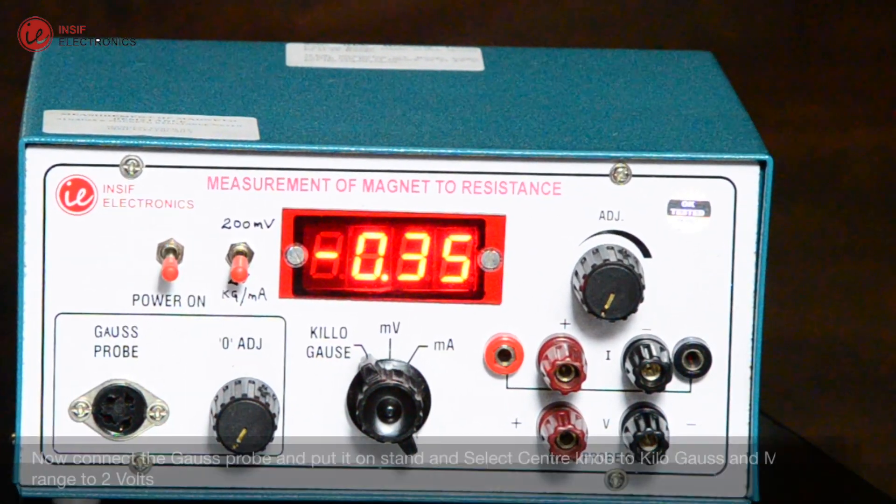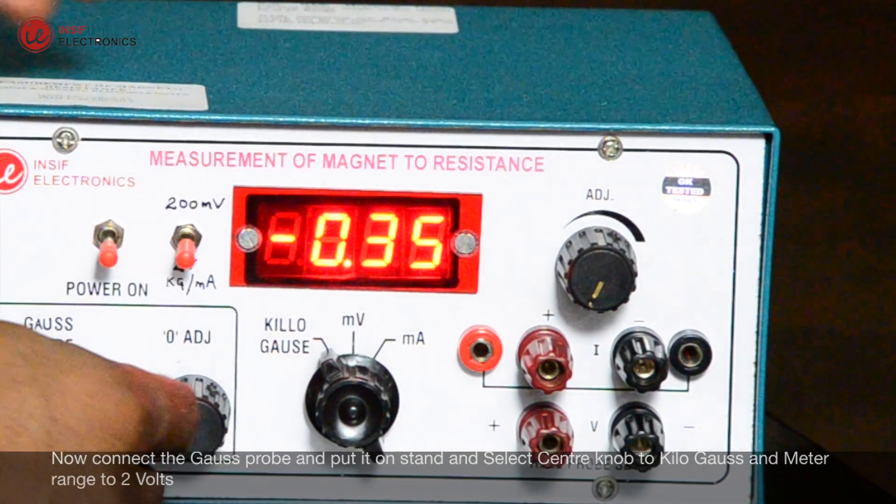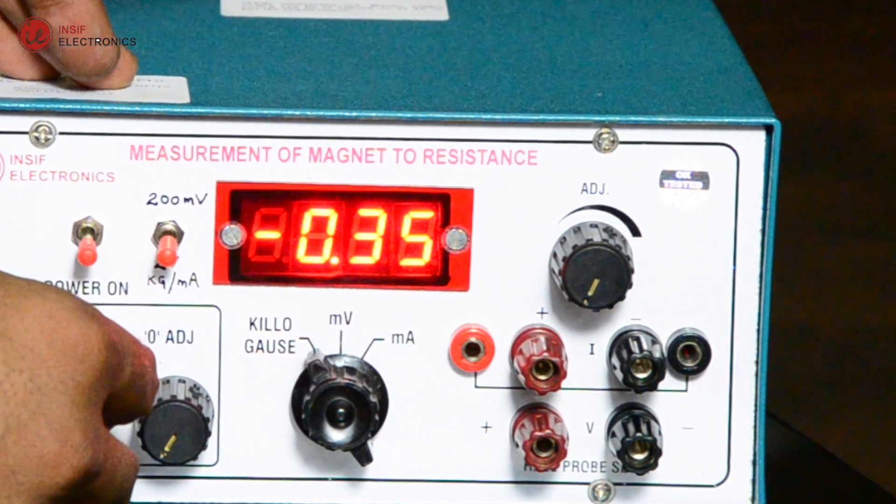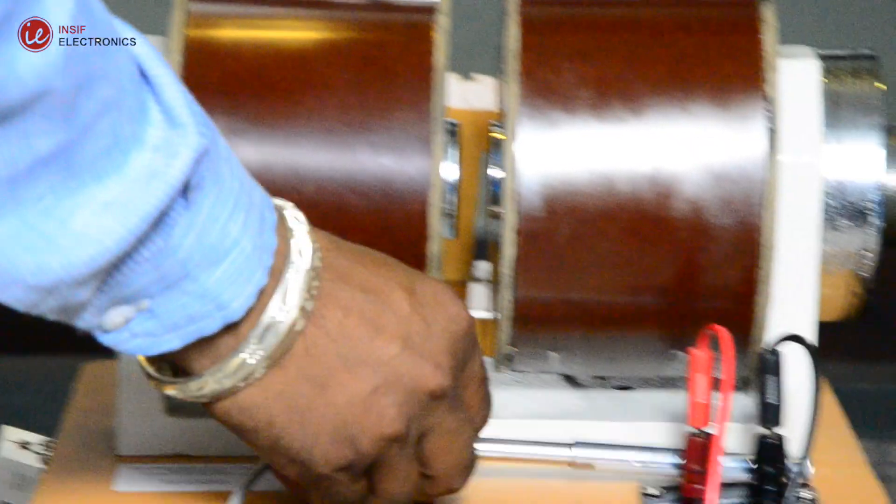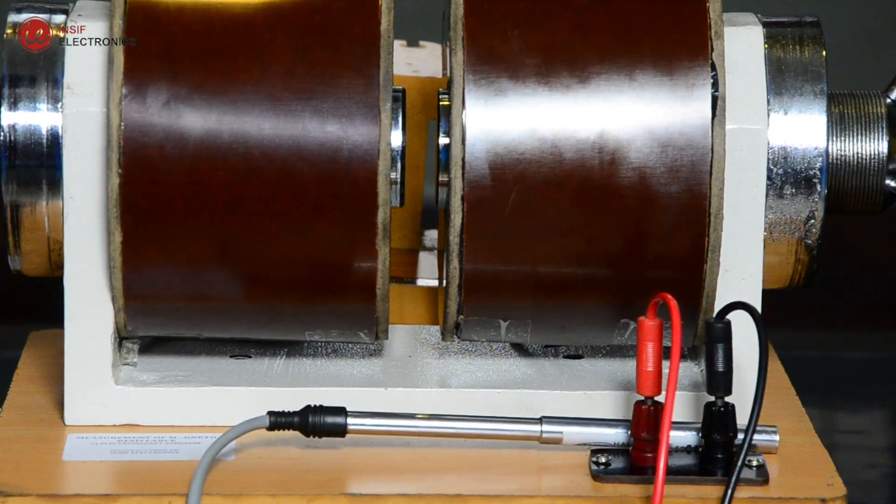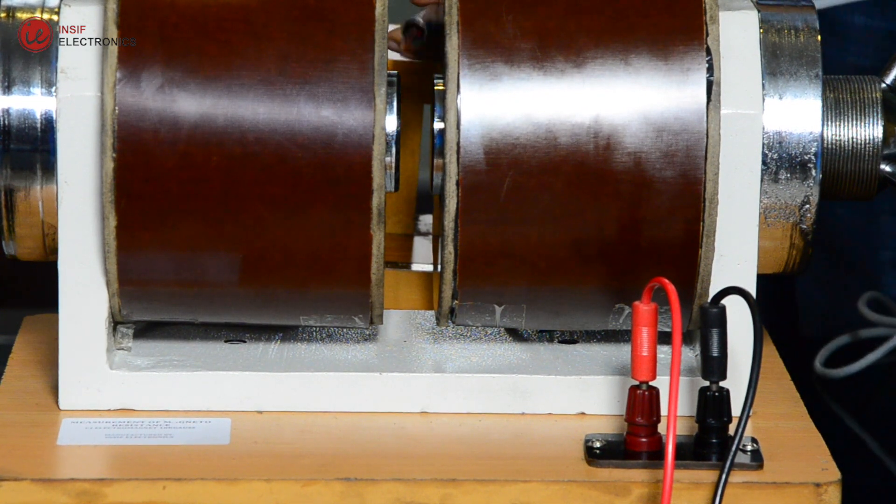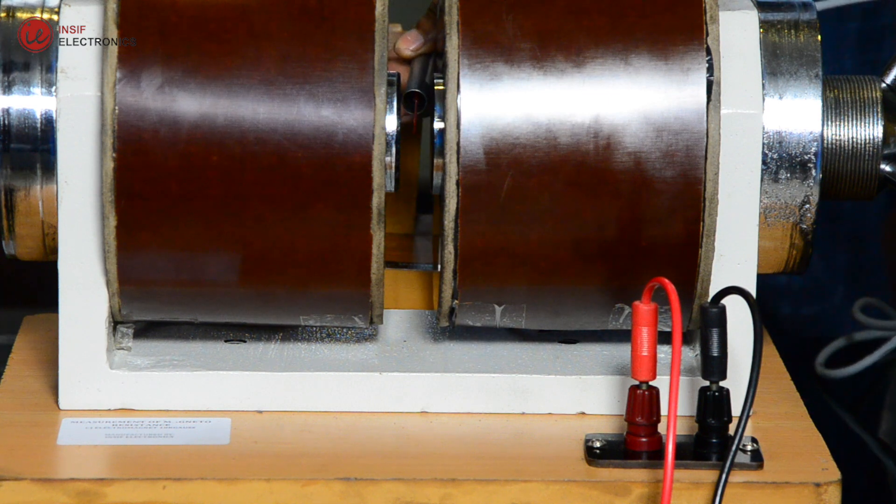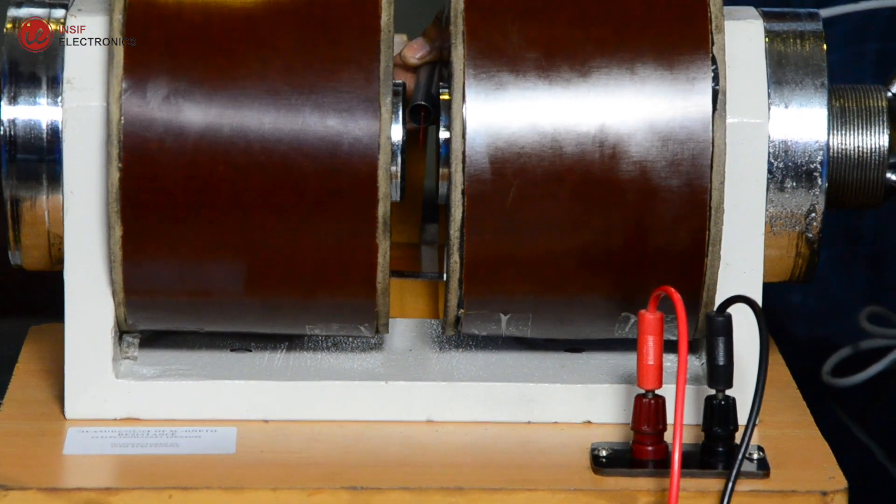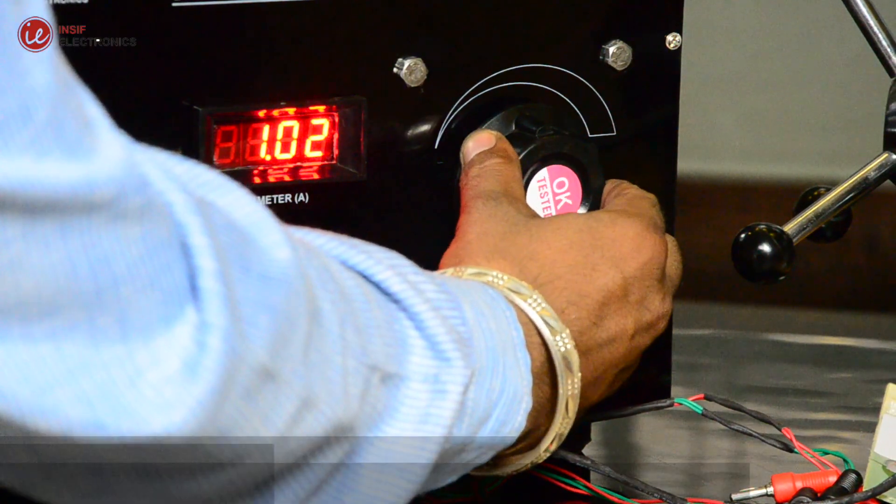Now connect the gauze probe and put it on the stand, and select the center knob to kilo gauze and meter range to 2 volts. Before placing the probe between the electromagnet, adjust zero by rotating the zero knob. After adjusting zero, place the gauze probe between the magnet and measure the magnetic field in between the pole pieces as a function of current through it with the help of the gauze probe and gauze meter.